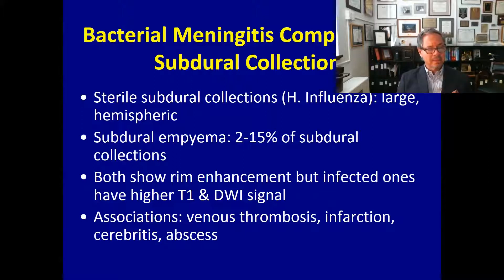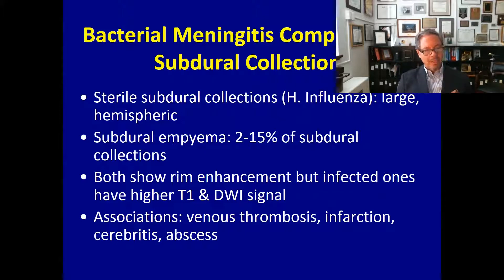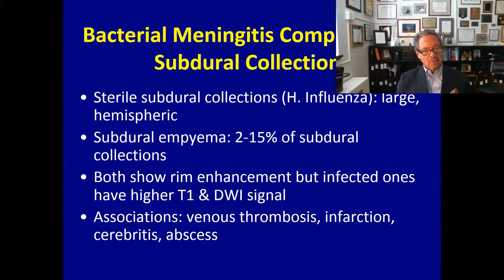An important complication is subdural collections. They can be sterile, which they are in the majority of cases, and can be large and hemispheric, but anywhere from 2 to about 15 percent will become infected and develop into subdural empyemas. With conventional imaging, even with gadolinium enhancement, it is very difficult to tell a non-infected collection from a subdural empyema — both have subtle increased signal on T1, high signal on T2, and peripheral membrane enhancement. The key in making the diagnosis of an infected collection is diffusion weighted imaging.